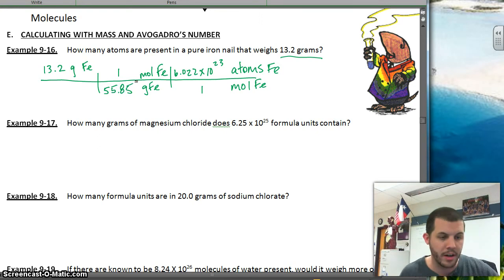And I should already have this math done, but I don't. So I'll let you watch me type it into the calculator. 13.2 times 6.022 E23 enter, divide 55.85 enter. And I get 1.4. Let's see, I need three sig figs. So 1.42 times 10 to the 23rd power atoms of iron. And that's how we do it.